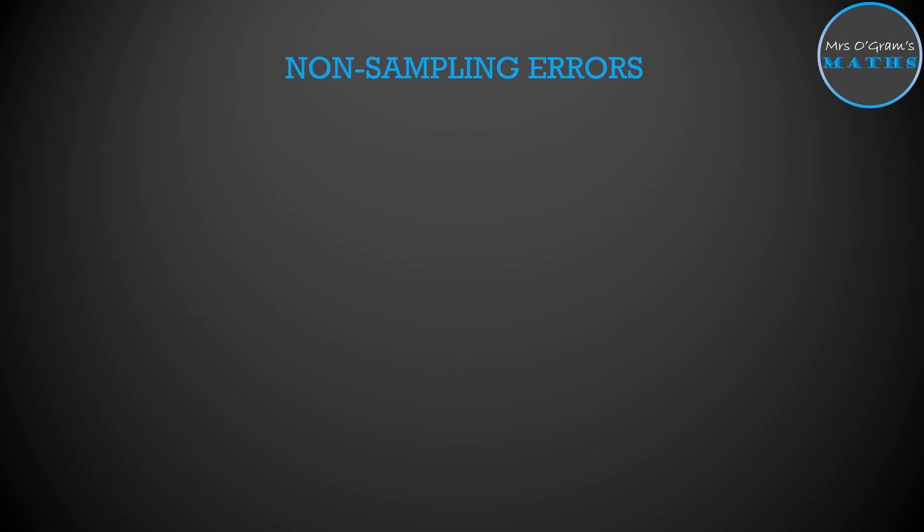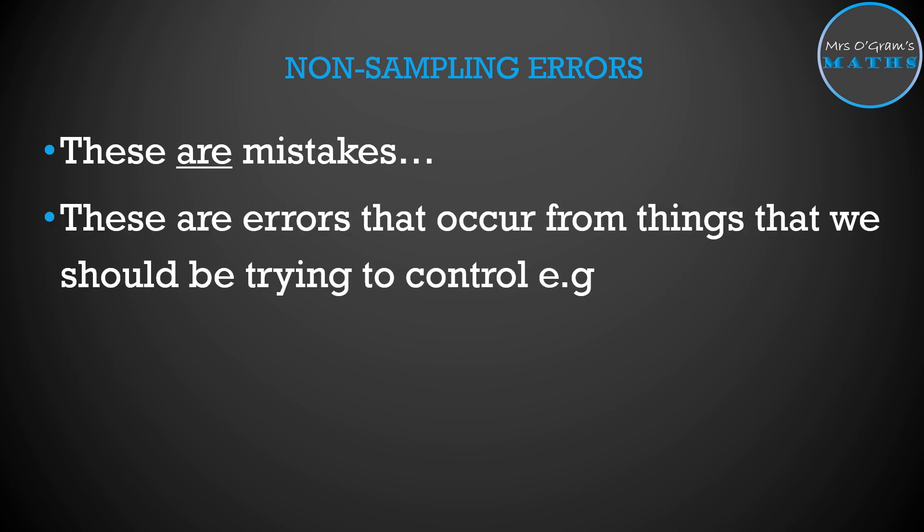There are also things called non-sampling errors. Now these are mistakes. These are things that we want to try and avoid by setting up good design to our investigation. These are errors that occur from things that we should be trying to control, for example bias in the sample. You want to make sure that your sample is representative of the population so there shouldn't be any reason to expect your sample to be biased. If you've accidentally come out with a sample that's biased, that would be a non-sampling error.